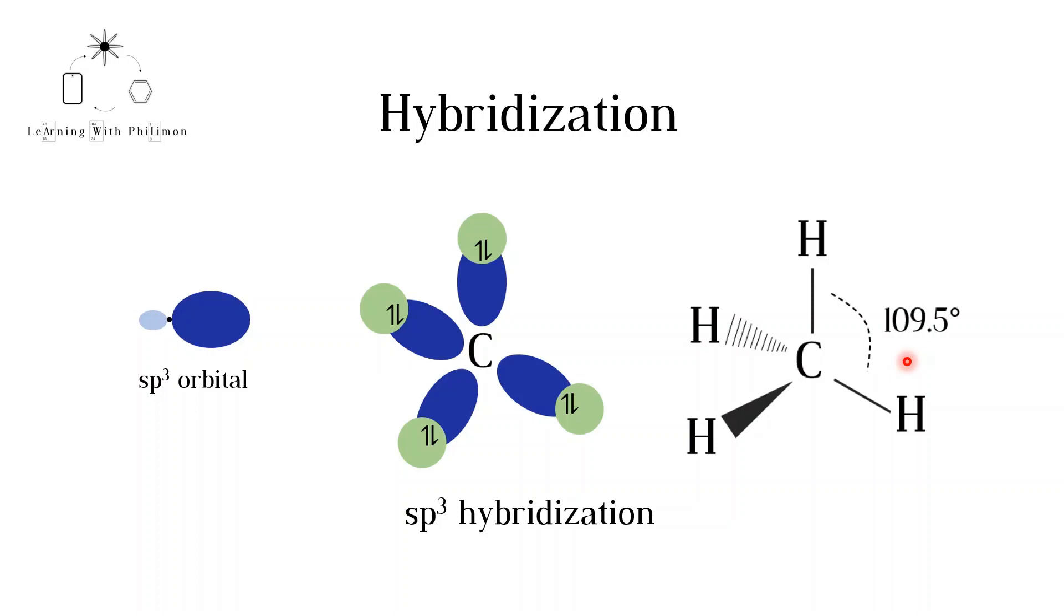The sp3 hybrid orbitals interact with the 1s orbitals from the hydrogen atoms to form four equivalent single bonds. Note that to make the diagram clearer, the smaller lobes of the hybrid orbitals are not displayed. In reality, the combination of the 1s and the sp3 hybrid orbitals would form bonding and antibonding molecular orbitals, as discussed in the previous video, molecular orbitals.